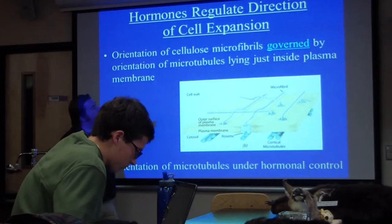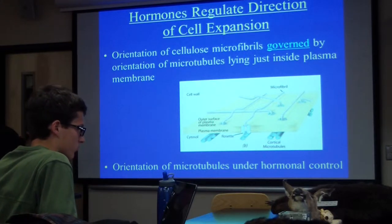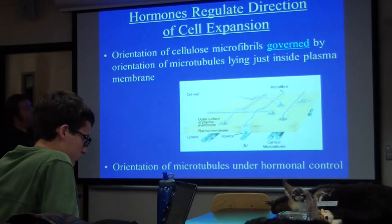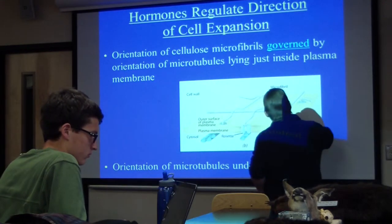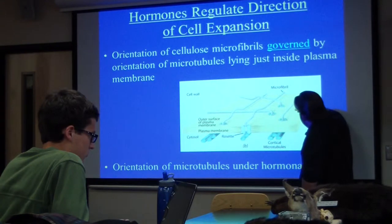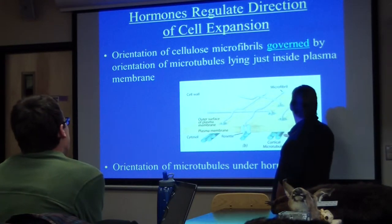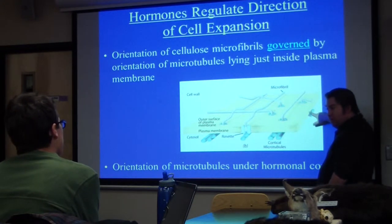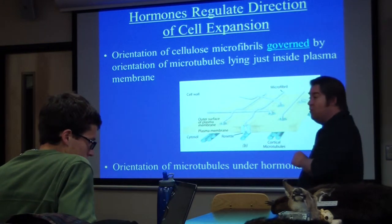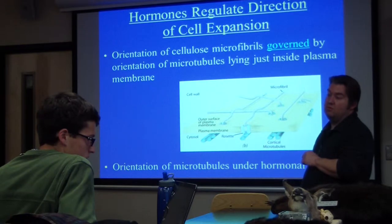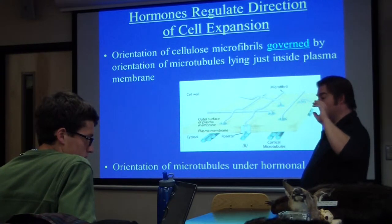The orientation of those cellulose microfibrils is governed by the orientation of microtubules lying just underneath them in the plasma membrane. Microfibrils are oriented in a certain way because the microtubules underneath them are oriented in a certain way. Here's a microfibril in the cell wall — and there's the underlying microtubule in the plasma membrane. Here's another microfibril, and there's the microtubule — they're oriented parallel to each other. The orientation of the microtubules is under hormonal control. So hormones influence the way that microtubules lie, which influences the way that microfibrils lie, which influences the direction of cell expansion.